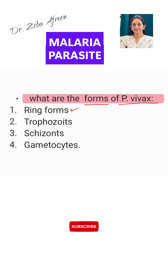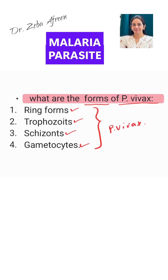These are the ring forms, trophozoites, schizonts that we have seen in our video, and the gametocytes. So all forms of the malaria parasite can be seen in the case of P. vivax. In my next video I will show the different forms of P. vivax in a peripheral blood smear. Thank you.